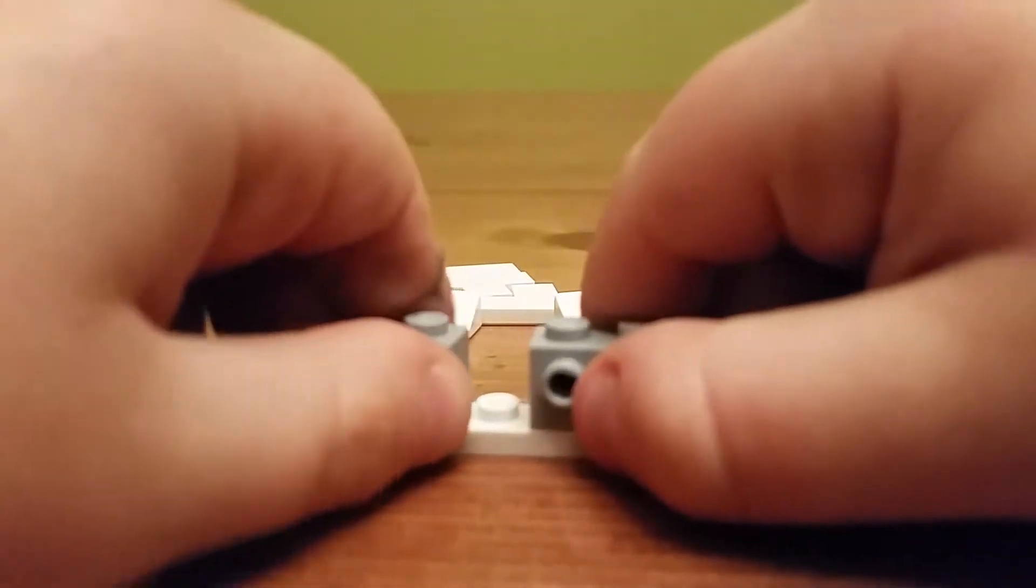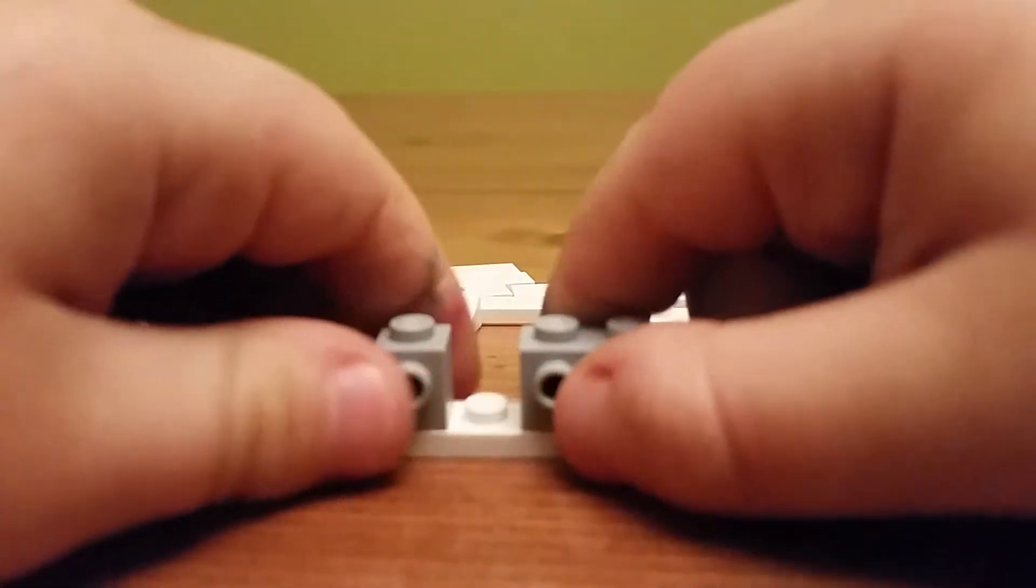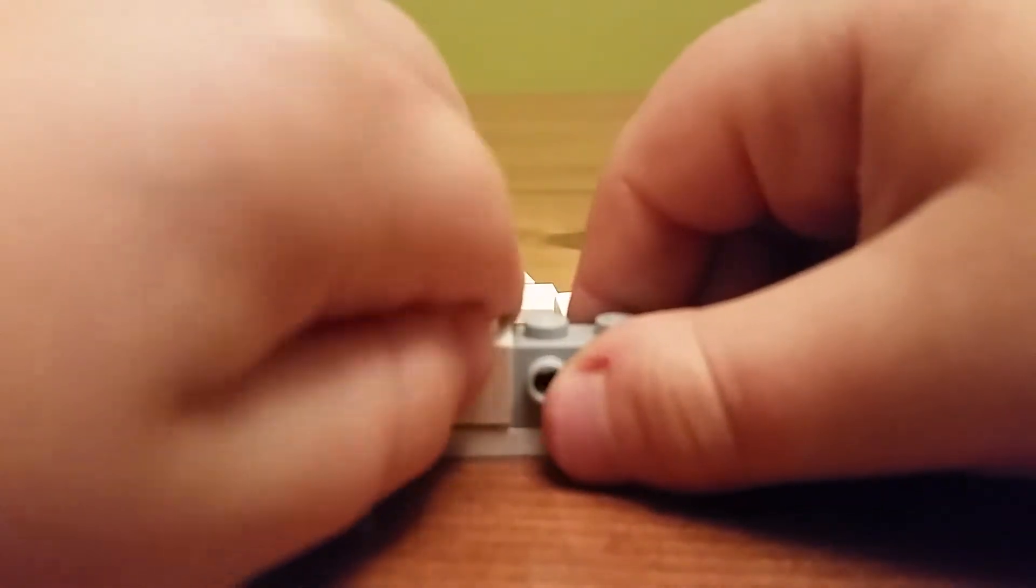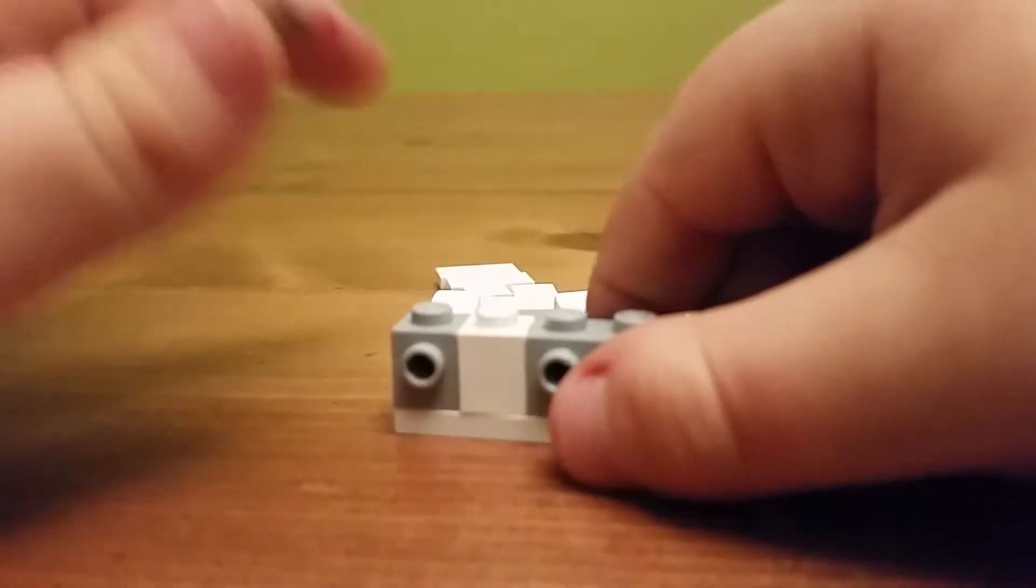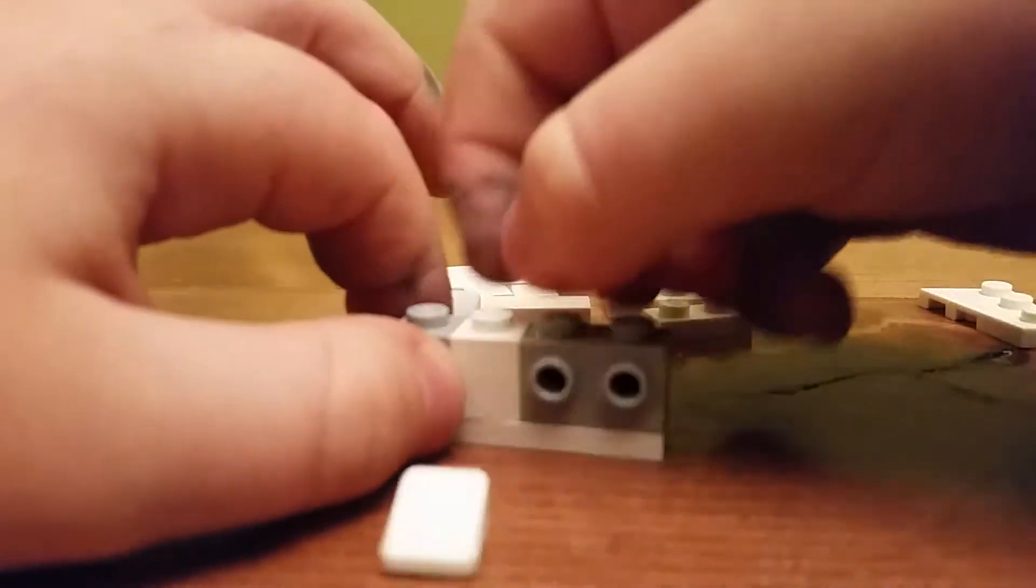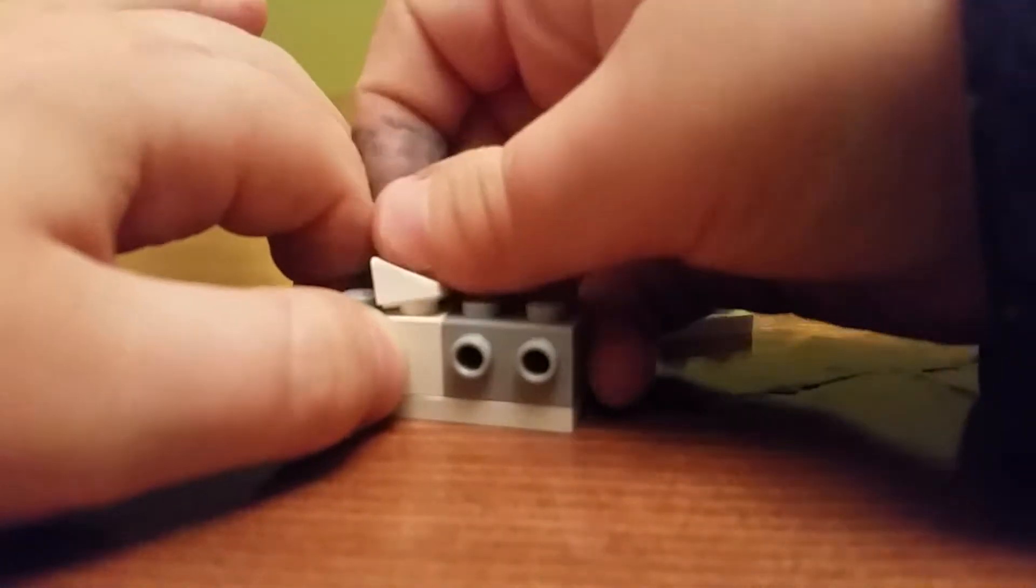You get this one by one white piece, you stick it in the middle. Then you get these two cheese slopes.